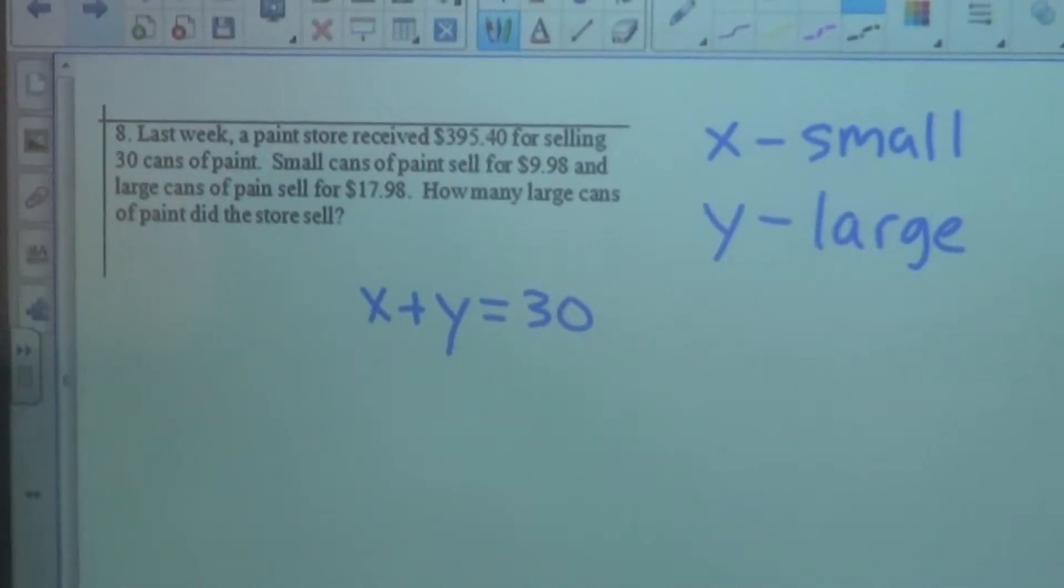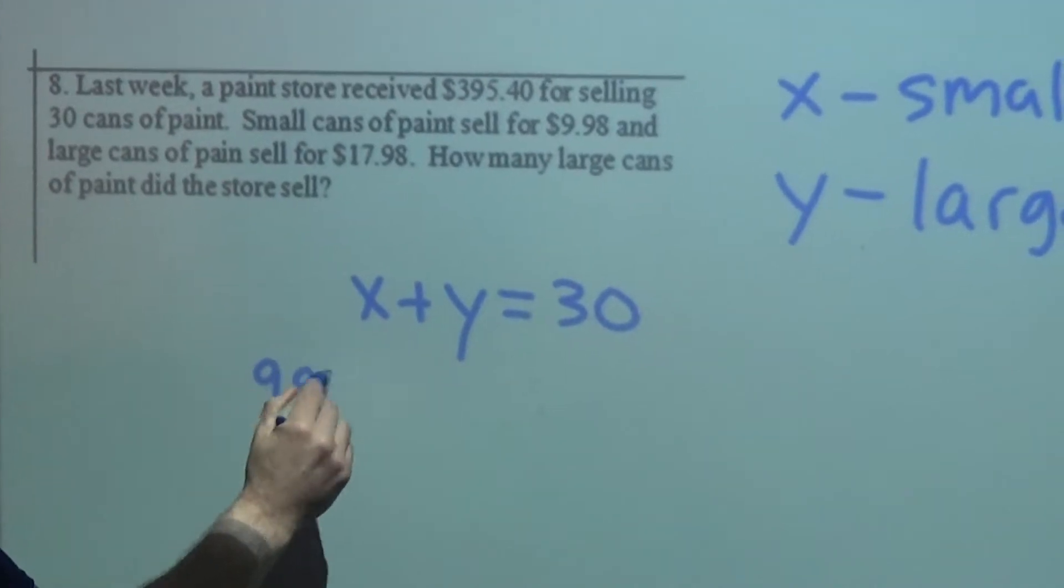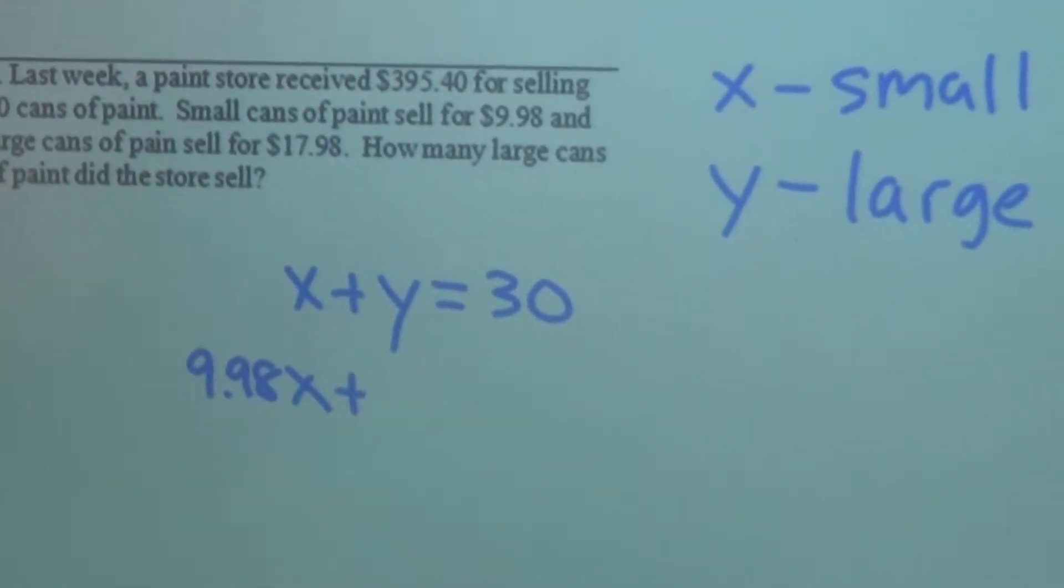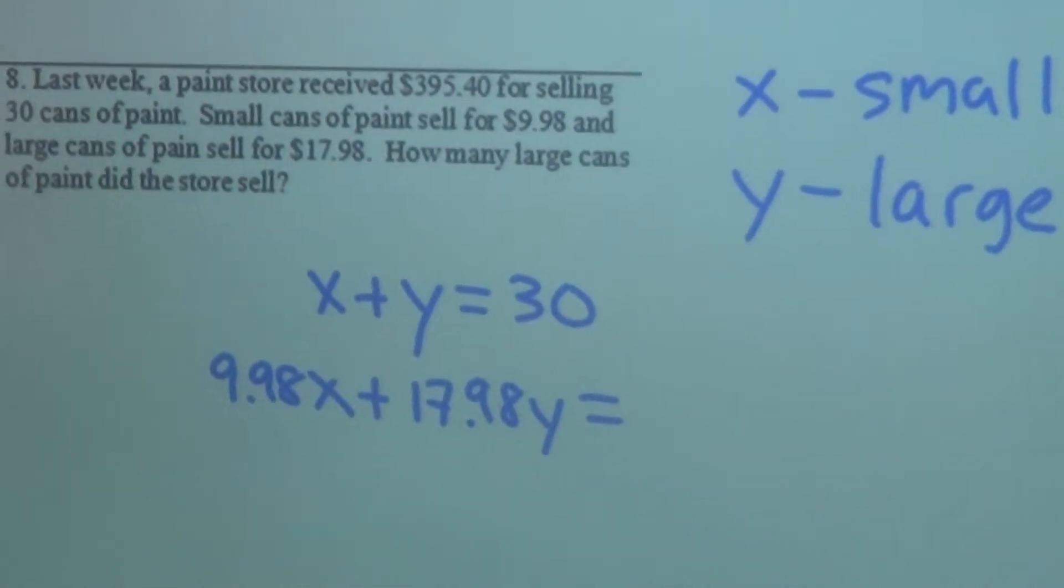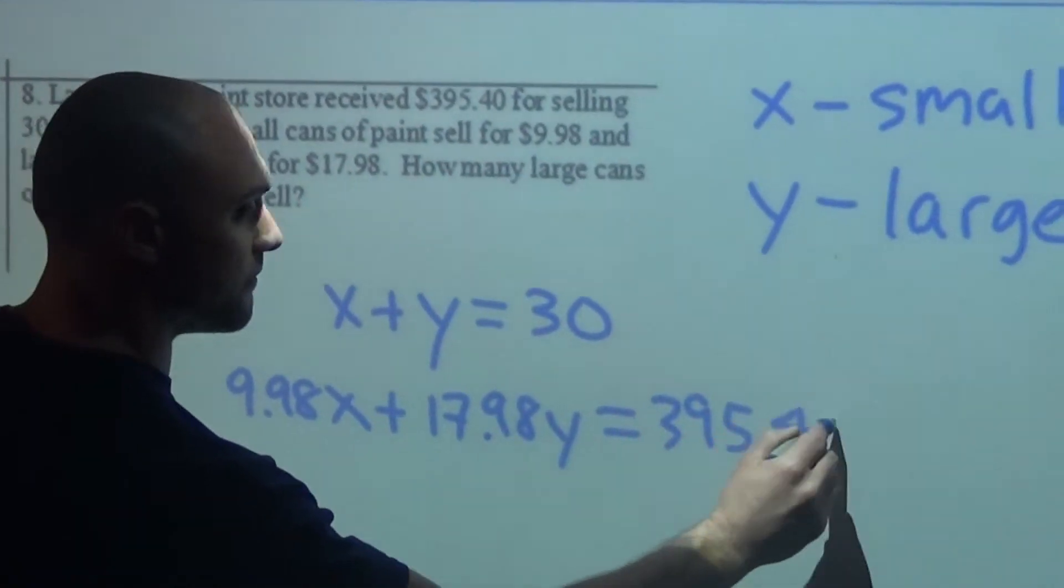Now we have to bring in the value of these cans. So small cans of paint are $9.98, so $9.98x, plus the large cans of paint, $17.98y. And that equaled a total of $395.40.